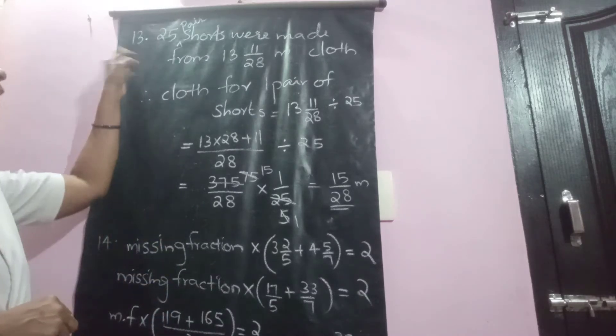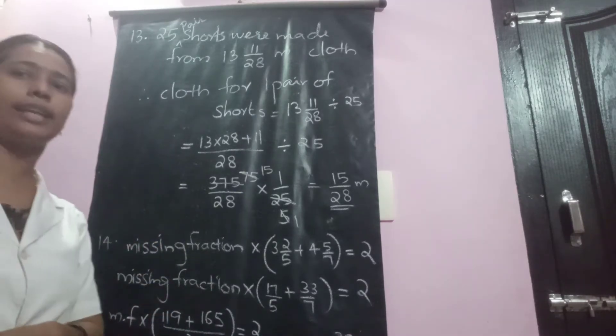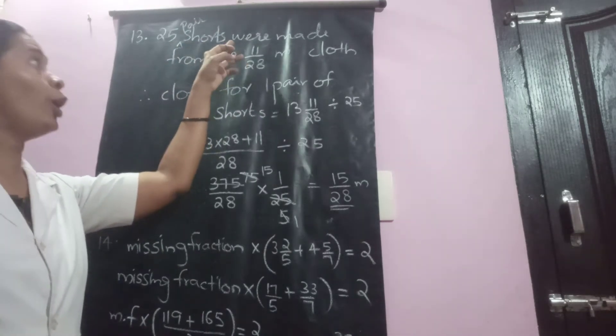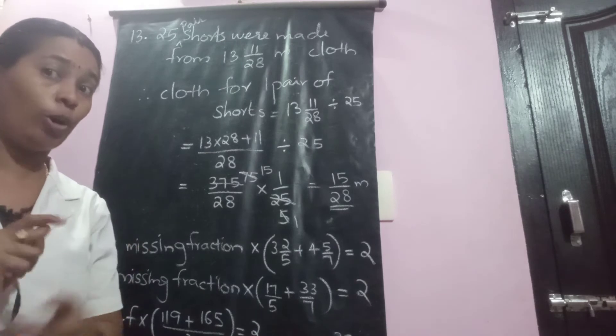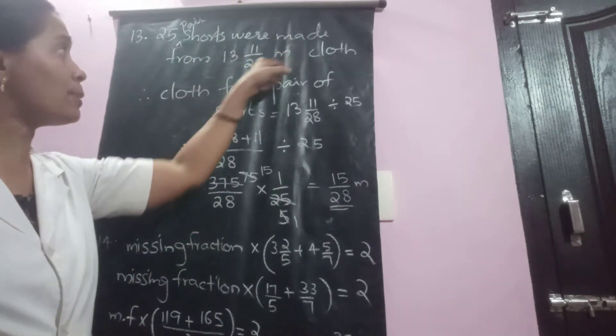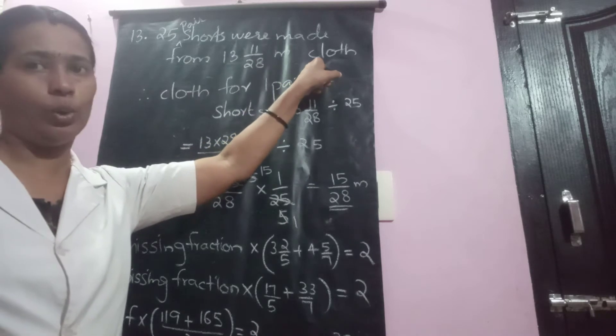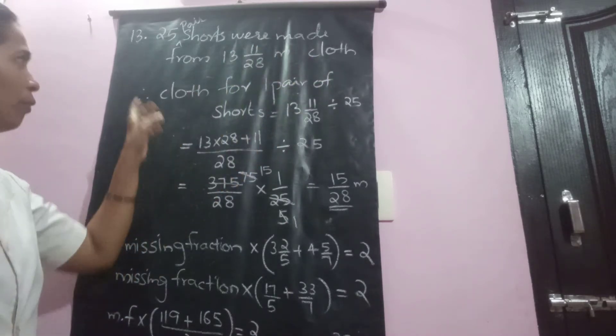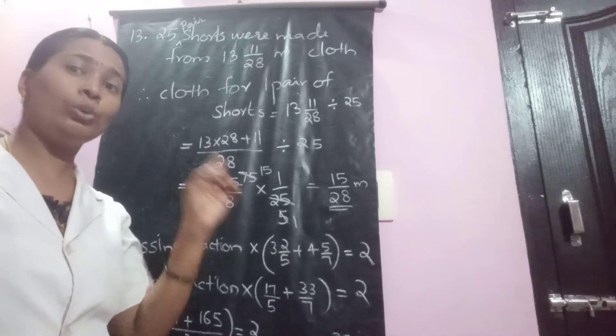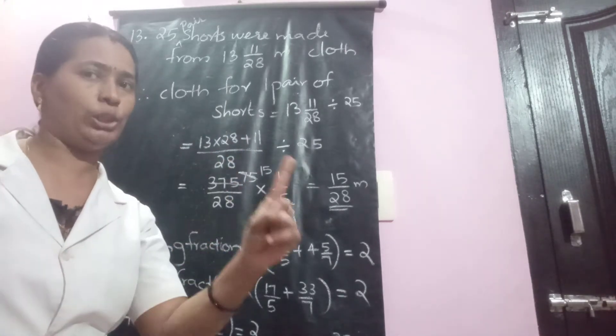Next we are moving to question 13. In the 13th question they are saying that 25 pairs of shorts of equal size were made from this much meter of clothes. So the question is, what will be the length of clothes used for 1 pair of shorts?